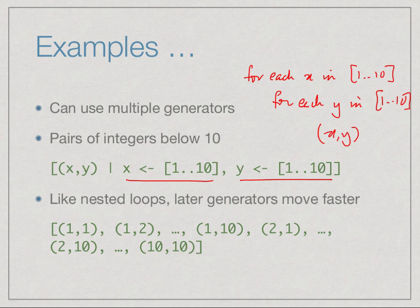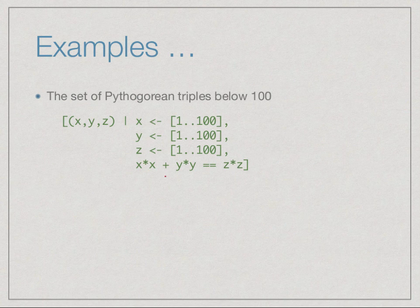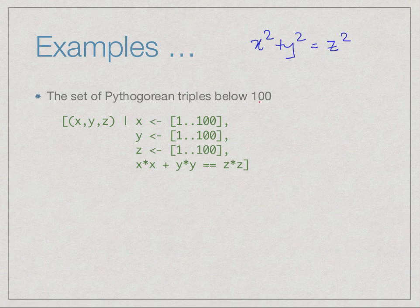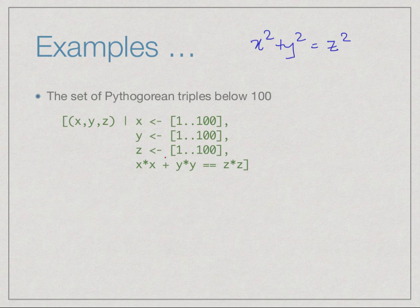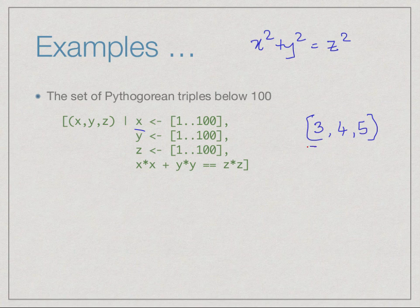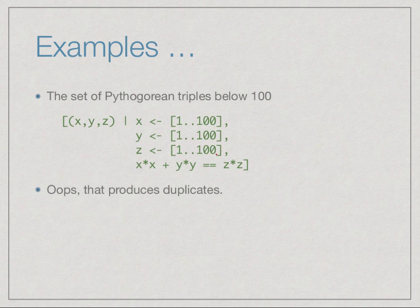Here is a way to generate all Pythagorean triples. Pythagoras's formula says x² + y² = z². We run x from 1 to 100, y from 1 to 100, z from 1 to 100, and check that x*x + y*y equals z*z. Using list comprehension with multiple generators we can generate all Pythagorean triples. However, notice that 3,4,5 is a triple, so it will be generated, but later when x becomes 4 we also generate 4,3,5 — giving duplicates.